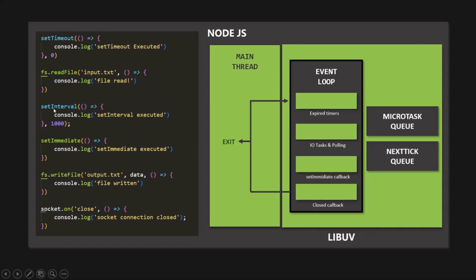For example, when using setInterval, which emits a callback every one second, the first phase will keep receiving that callback, so the event loop must continue with the next tick. Also, when we are listening for incoming HTTP requests, we are running an I/O task. Each time a new request comes to the server, the callback attached to the request event is pushed to the second phase's callback queue, and the next tick of the event loop starts. That is why the event loop and Node.js keeps running and listening for new HTTP requests instead of exiting after the first request.